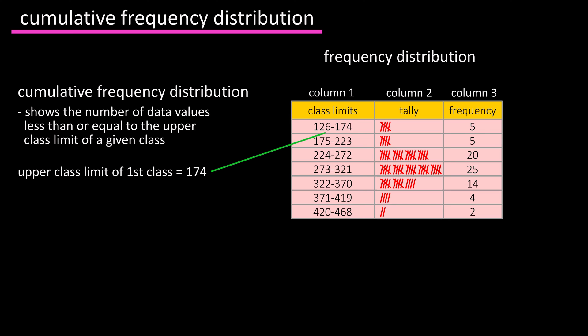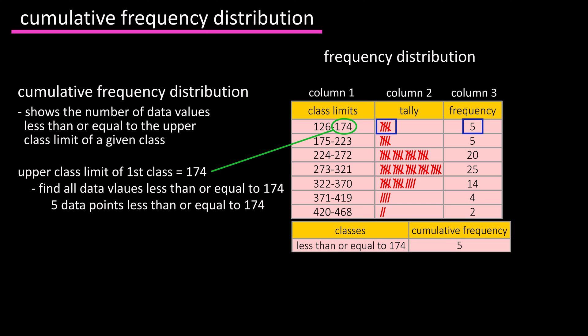The upper class limit for the first class is 174. So we want to find all the data values in the data set that are less than or equal to 174. Since we already have a tally, we know that there are five data points that are less than this number. You could also just look at the frequency column to get this number.